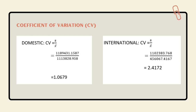For the coefficient of variation (CV), which is the last part of measures of dispersion, CV equals standard deviation divided by the mean. For the domestic part, the CV is 1.0679. For the international part, the CV is 2.4172.